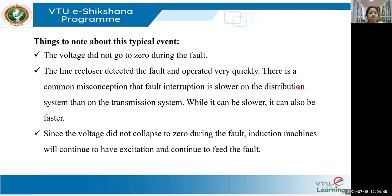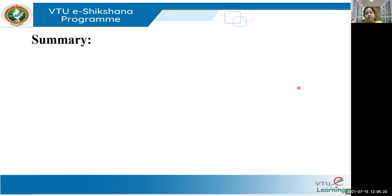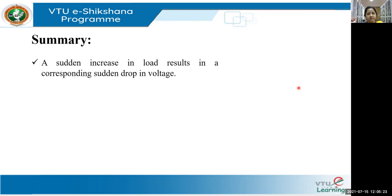If the system comes to zero, all machines come to a halt — which is a big loss for industries. So the system has to be fast enough to sense the fault and bring it back to normal state. Since the system voltage did not come down to zero, the machines connected to the system kept feeding the fault.